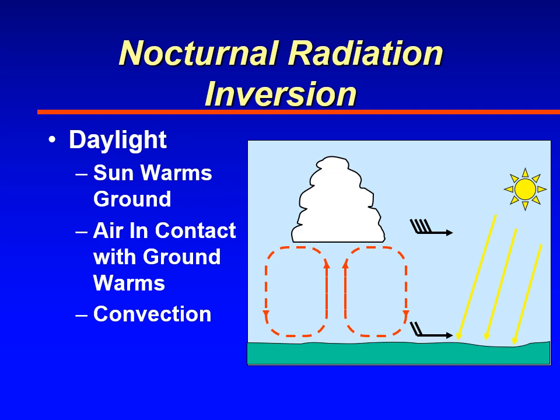With the nocturnal radiation inversion, we start by looking at the daytime temperature profile. During the day, the sun heats the ground, thermals rise through the atmosphere, and if there's enough moisture clouds may form. Alongside those thermals is sinking air, which mixes the lowest layers of the atmosphere — what we call the mixed layer, or the layer of convective turbulence.